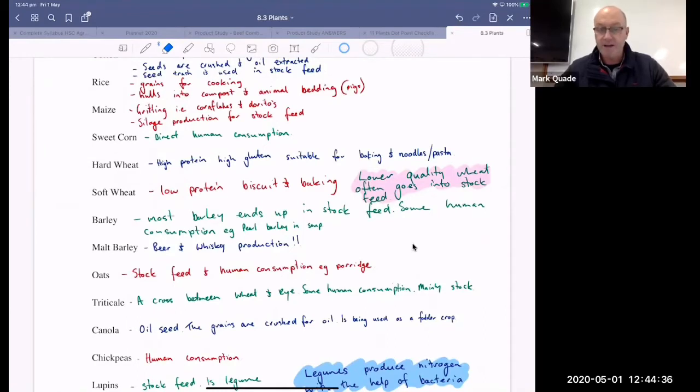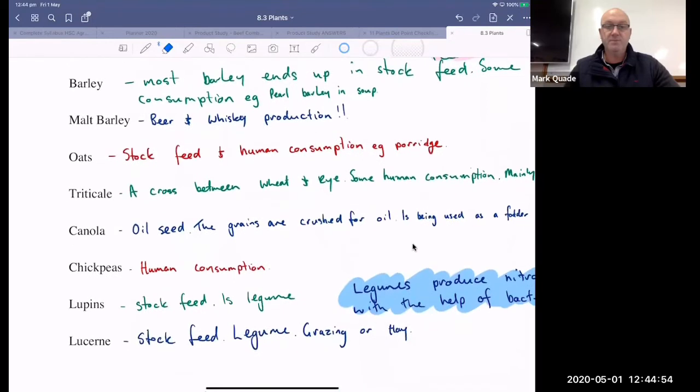Barley, stock feed again. Then some human consumption, like soups, pearl barley and stuff like that. And then we have malt barley. So malt barley goes into beer production. And whiskey, apparently. Oats, stock feed and human consumption. So rolled oats. That's what your porridge is. That is literally the hull has been taken off from the hard bit around that protects the seed. And that's it. That's all rolled oats are. They literally go through a roller. That is the only way that they're processed. Some of it goes into other foods as well.